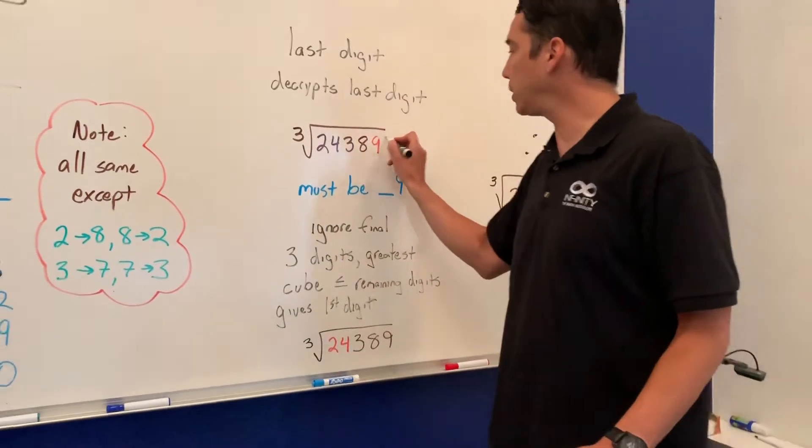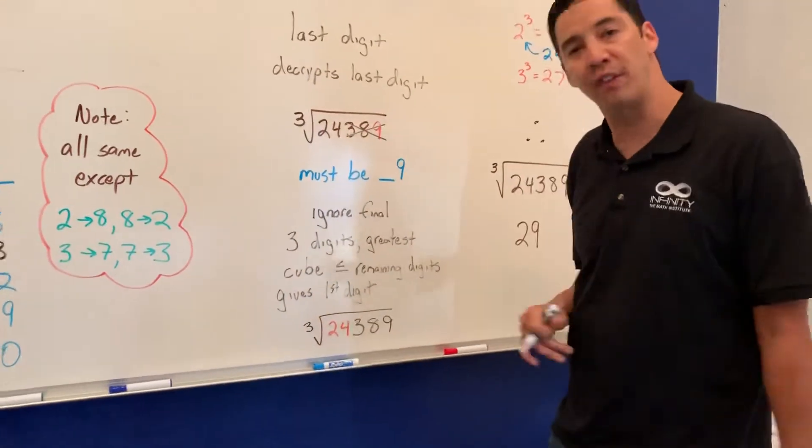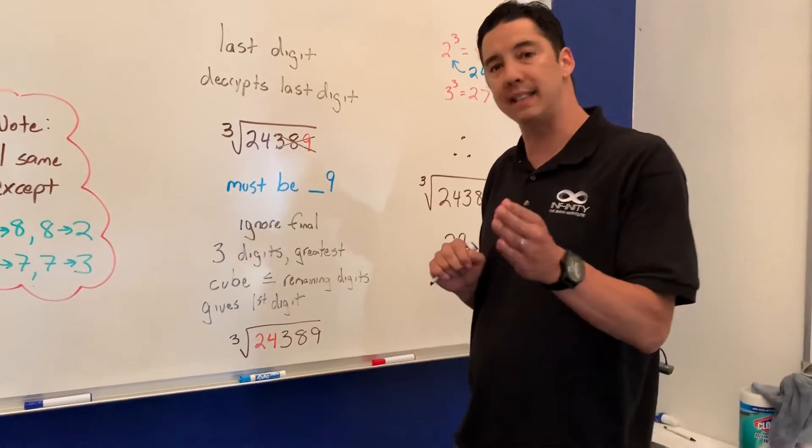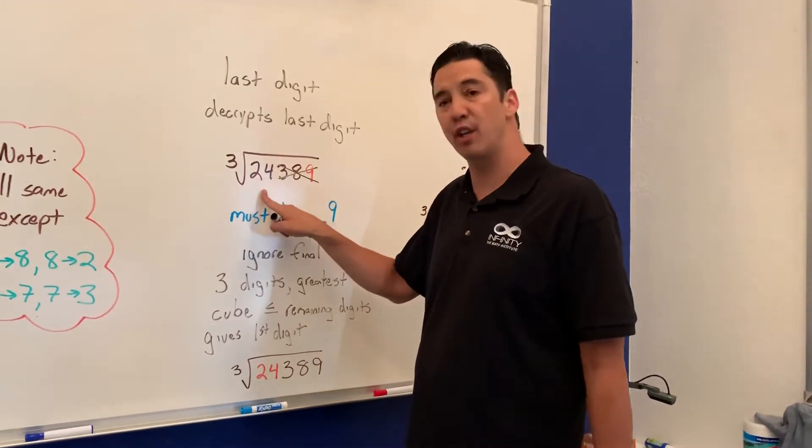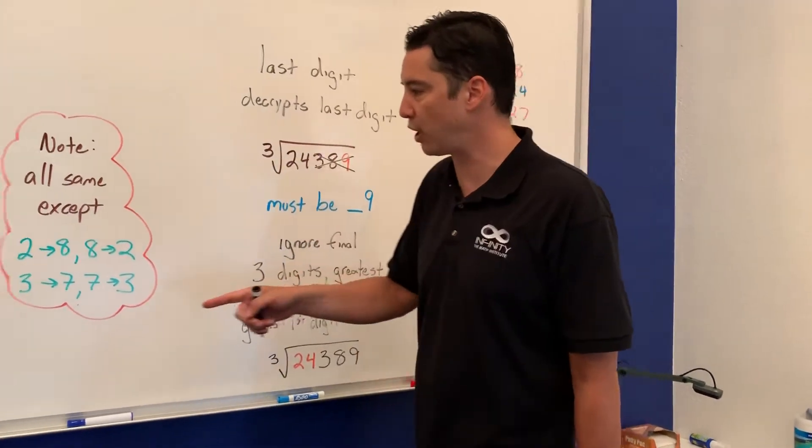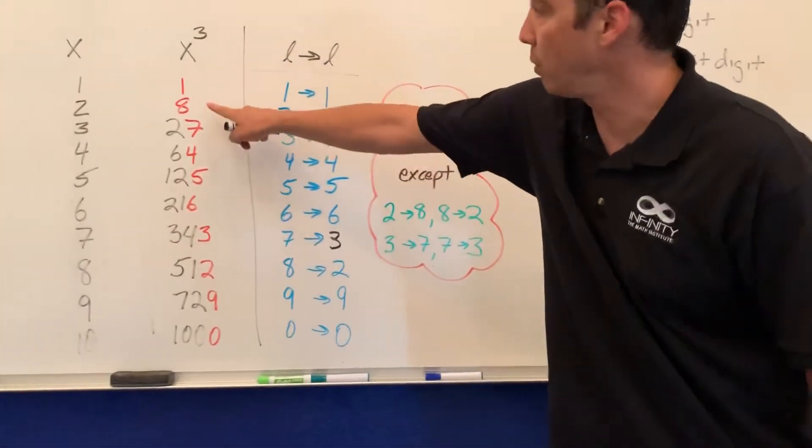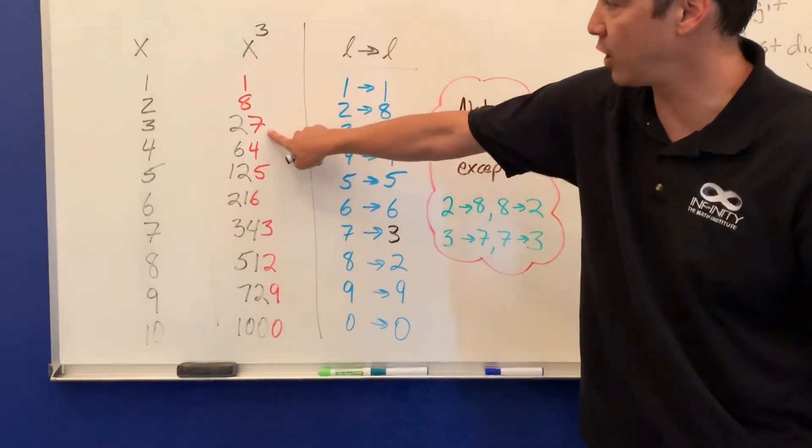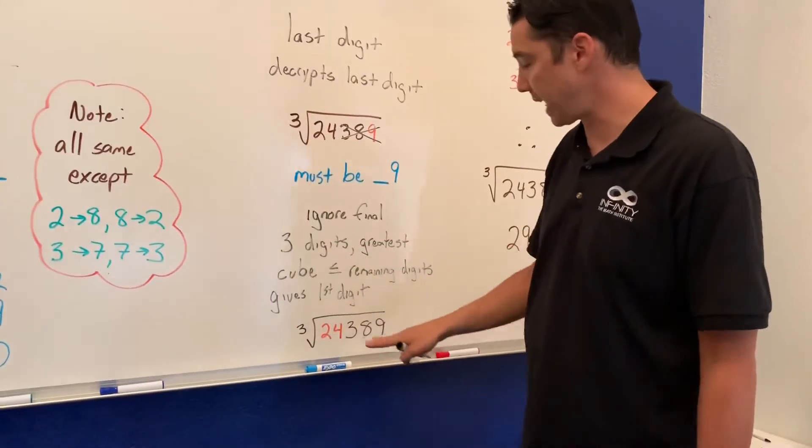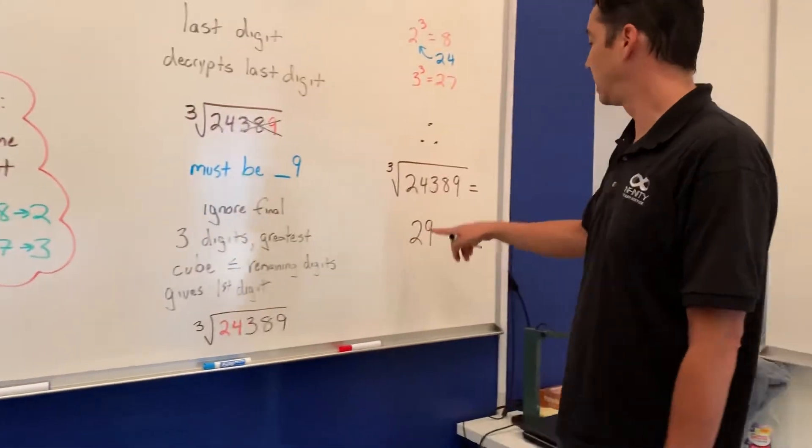After that, we get rid of the last 3 numbers and we only look at those 2 numbers. What is the greatest cube less than 24? Well that would be 2, because 2 cubed is 8. 3 cubed is 27, and 27 is greater than 24. So the answer must be 29.